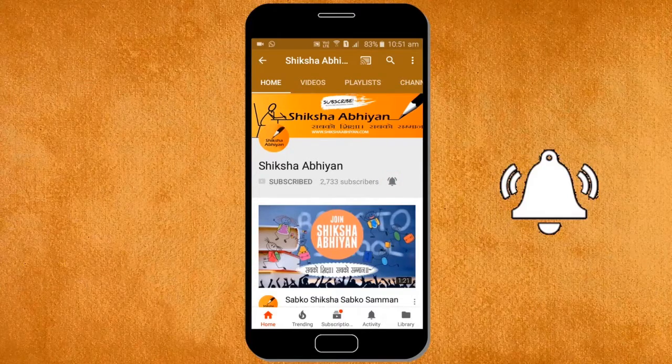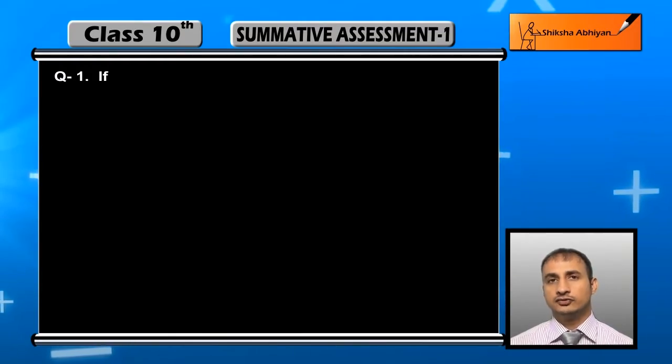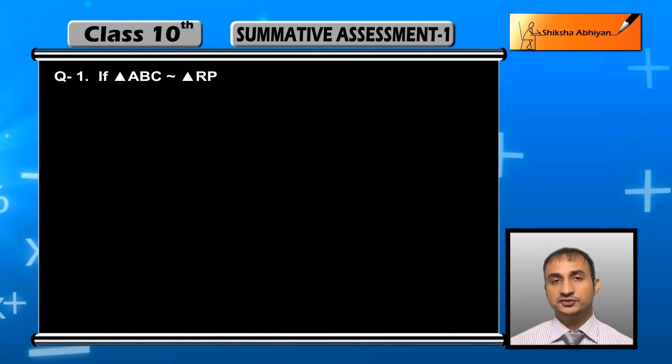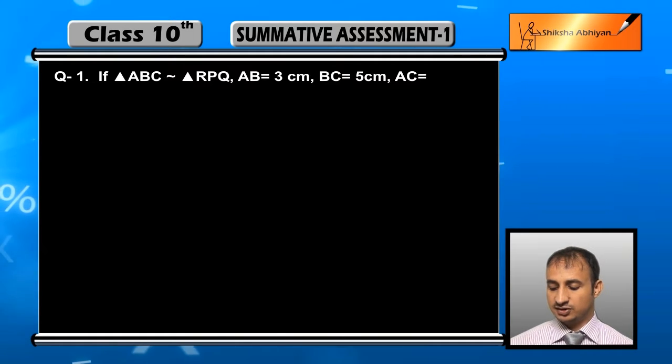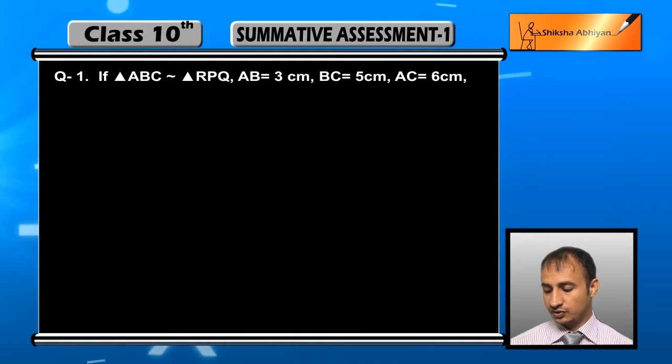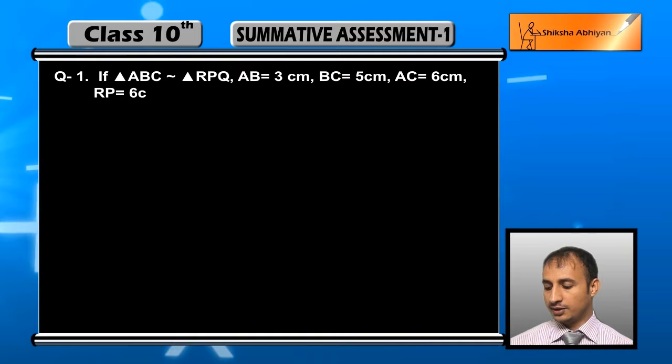See the first question of the question paper: If triangle ABC is similar to triangle RPQ, AB is equal to 3 centimeter, BC is equal to 5 centimeter, AC is equal to 6 centimeter, RP is equal to 6 centimeter, PQ is equal to 10 centimeter, then find QR.